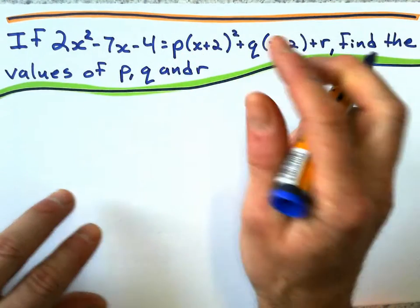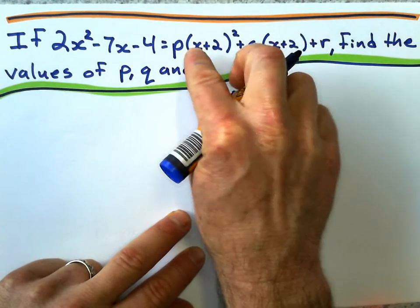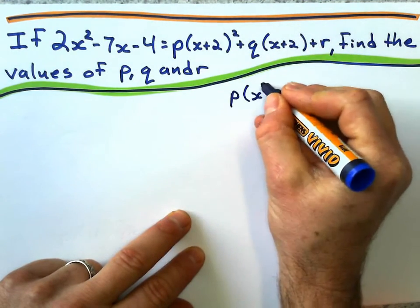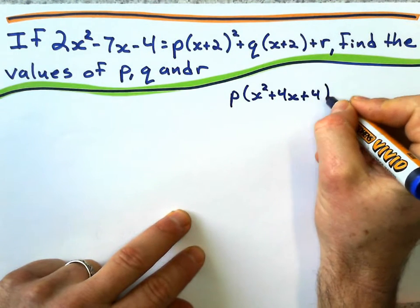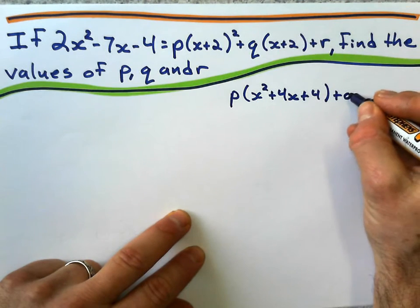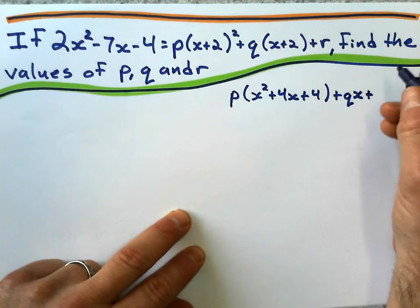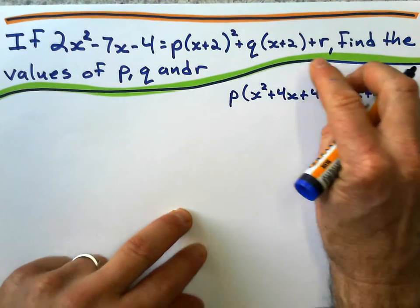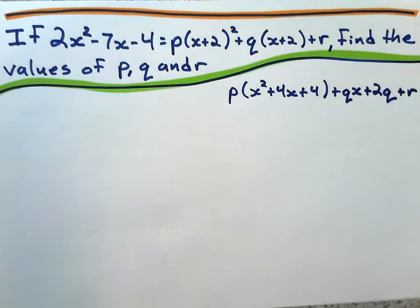First of all, I expanded these through. So P, let's see, this gives me x squared plus 4x plus 4, okay, so that's that part. I expanded this part, Qx plus 2q, right there, and then just a plus R on the end.